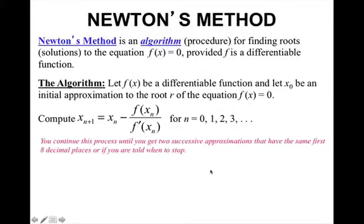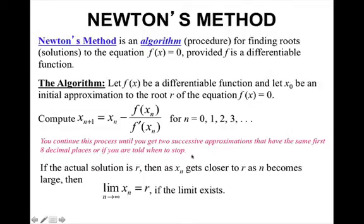You continue this process until you get two successive approximations that have the same first eight decimal places, or if you are told when to stop. If the actual solution is r, then x_n gets closer to r as n becomes larger. Then we can say that the limit as n goes towards infinity of x_n equals r, if the limit exists.